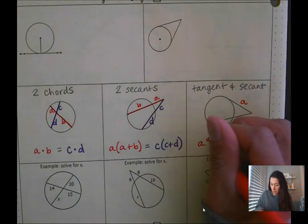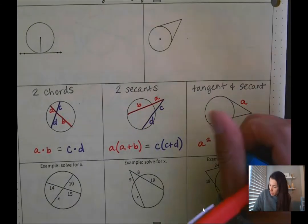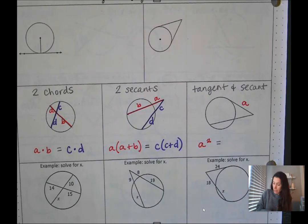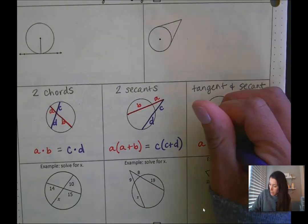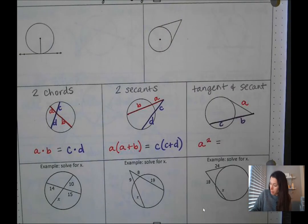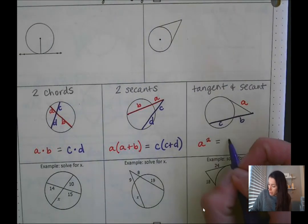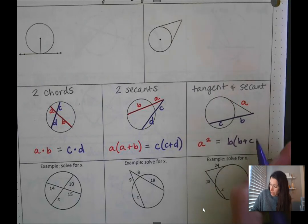So we can just say A squared and then we'll set that equal to, let's use the letters B and C for this line here. It's going to be set up the same way. So the outside piece multiplied by the entire segment length.